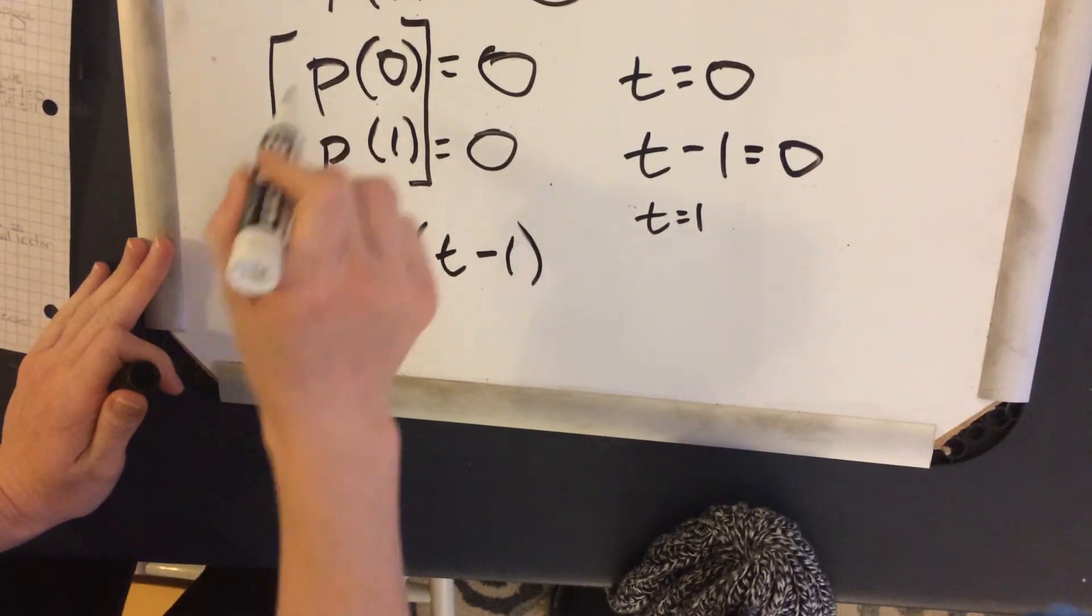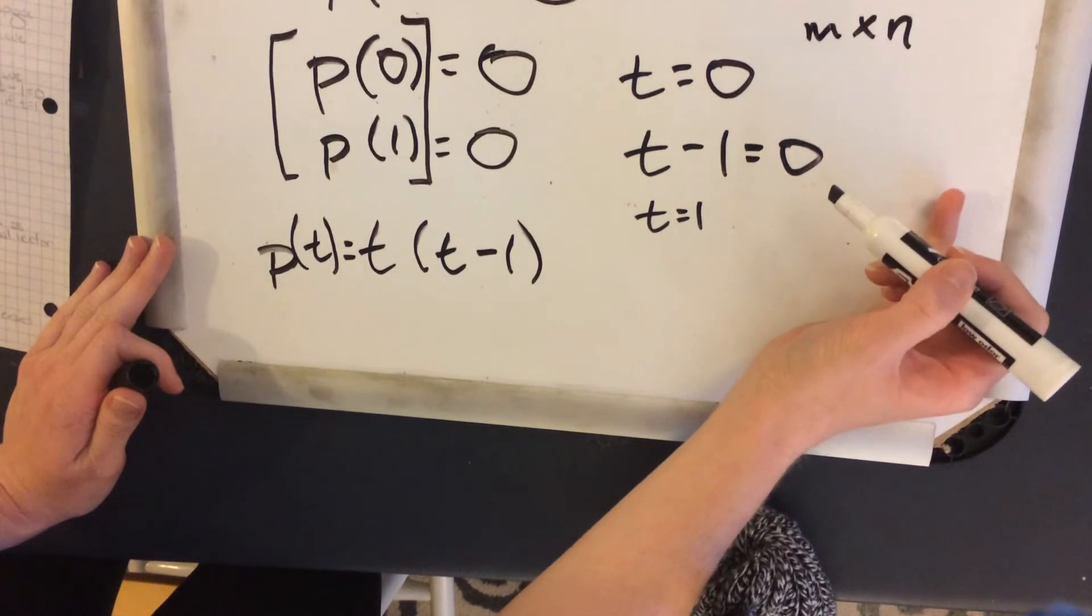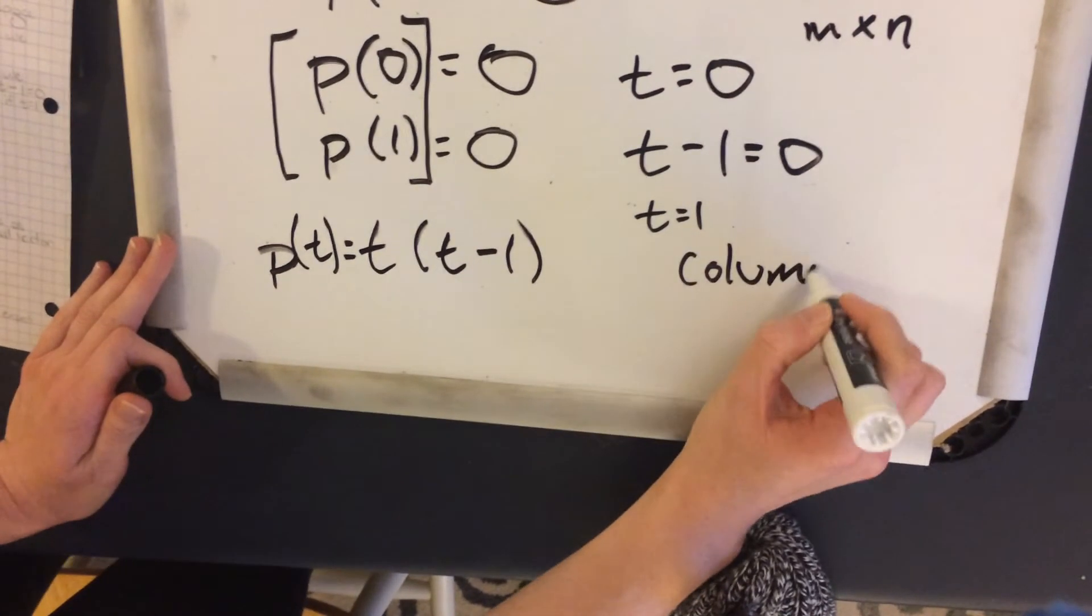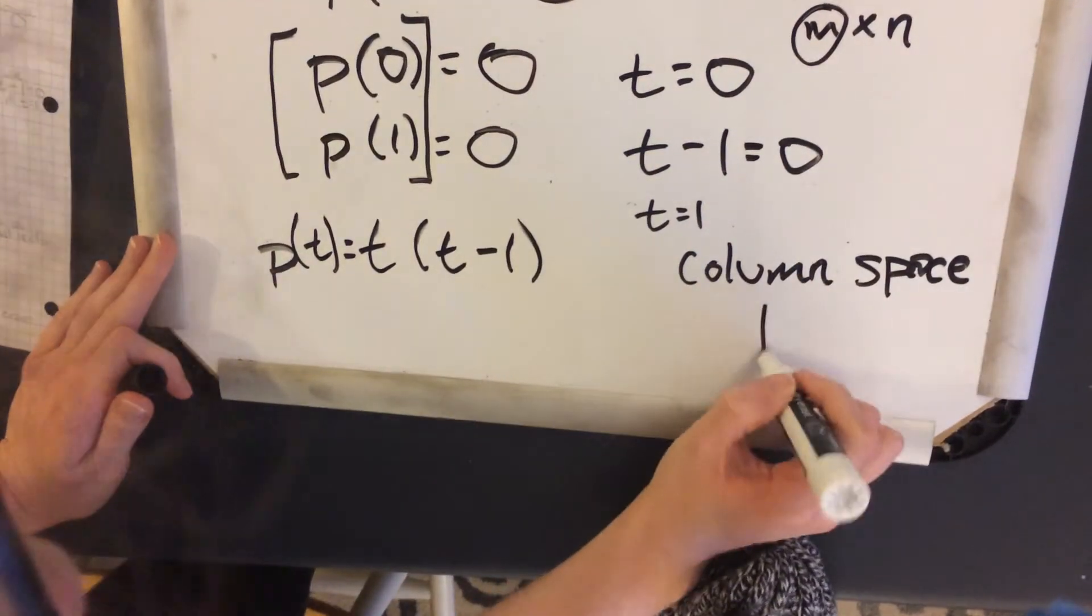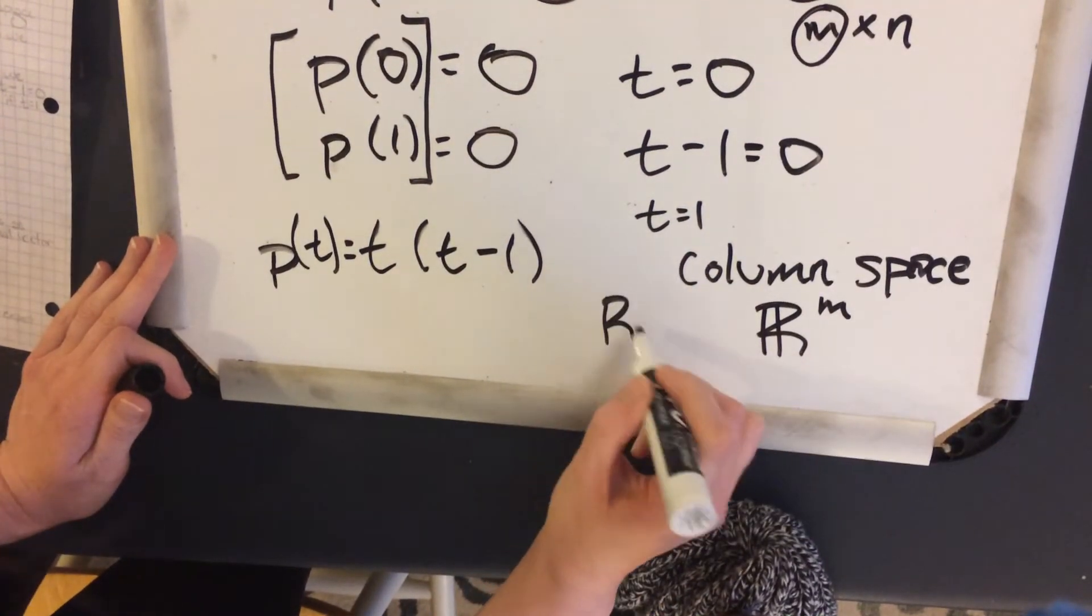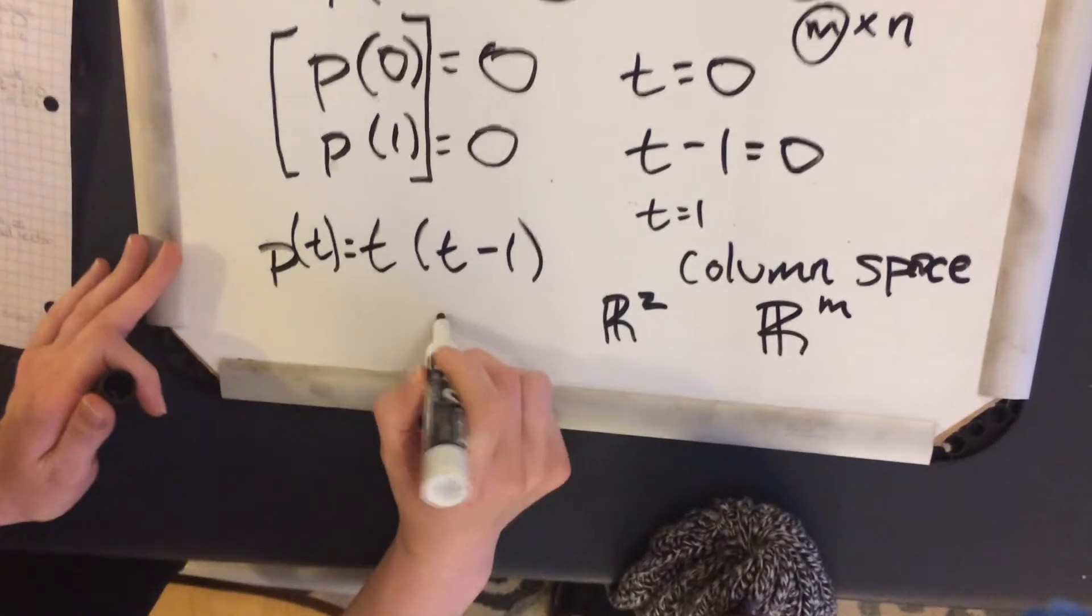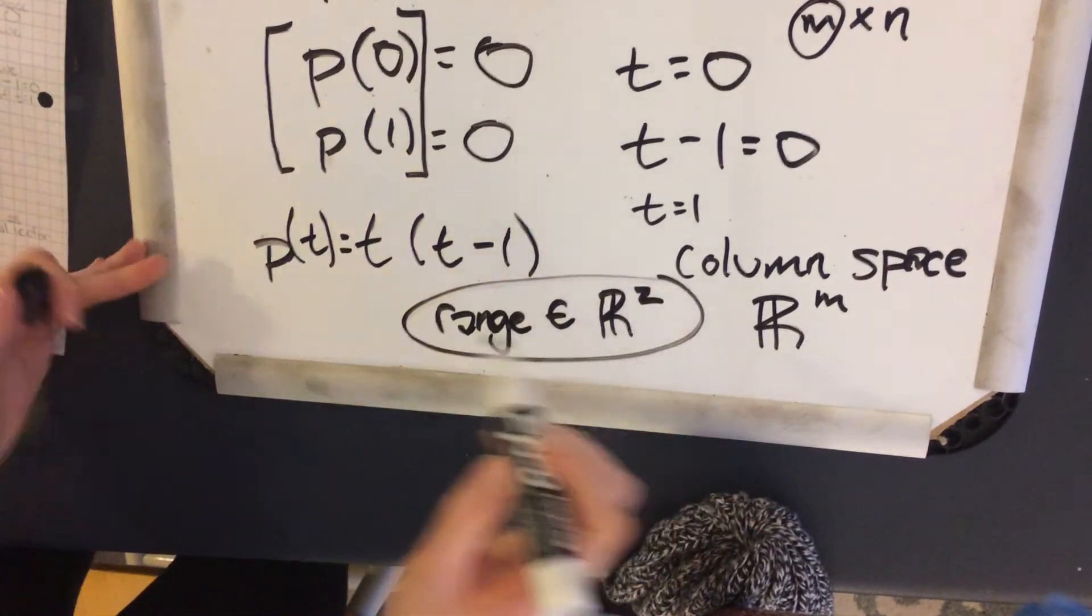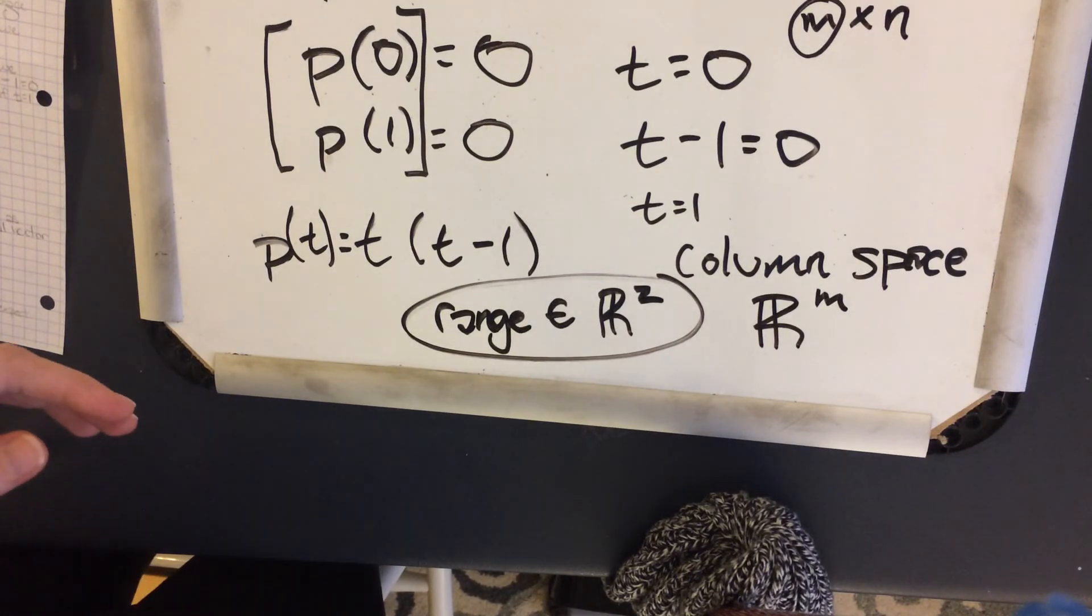And since we know that this was our original matrix. Again, as I said, this is a 2 by 1 matrix. And since we knew the range was supposed to be the column space, column space is supposed to be in correspondence with R^m. And in our case, that's 2. So we can expect that our range is in R². And that is all. Thanks, guys.